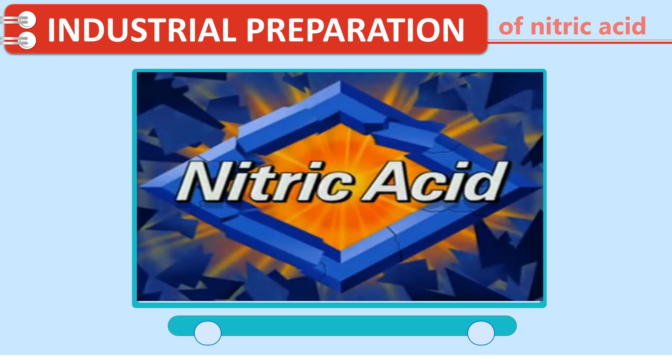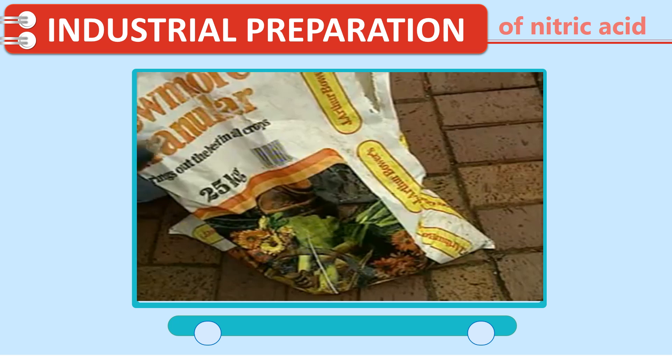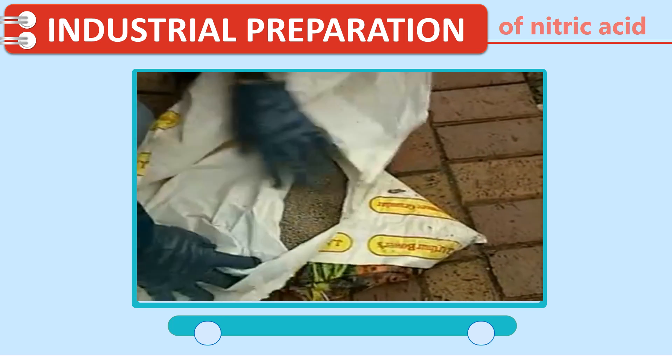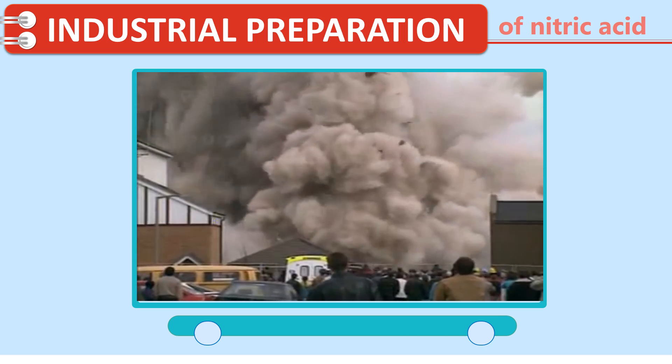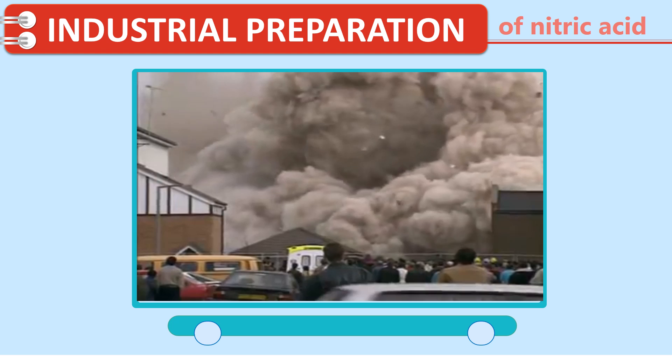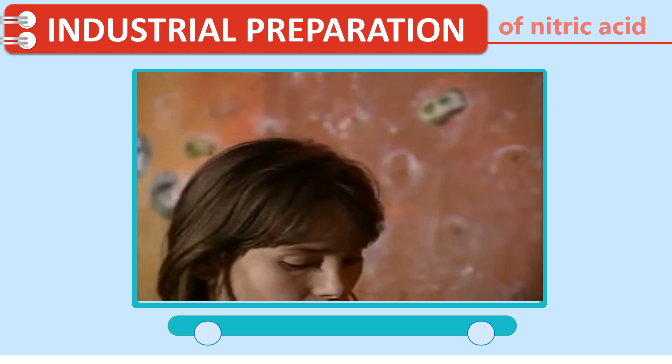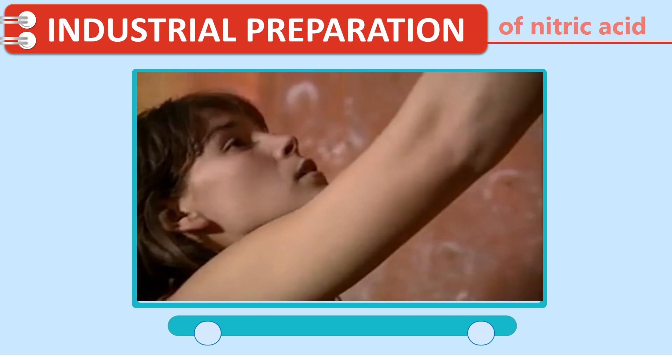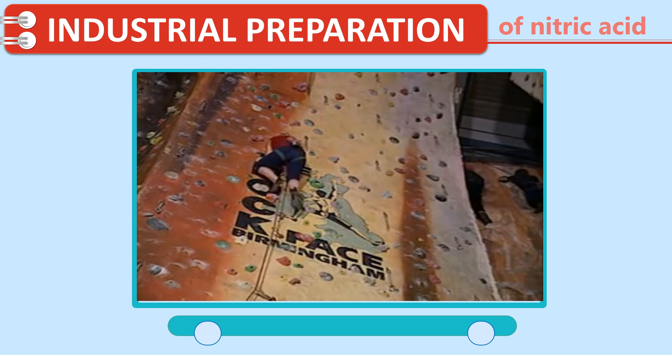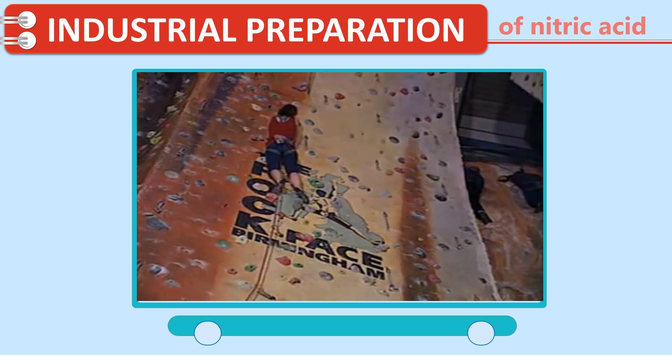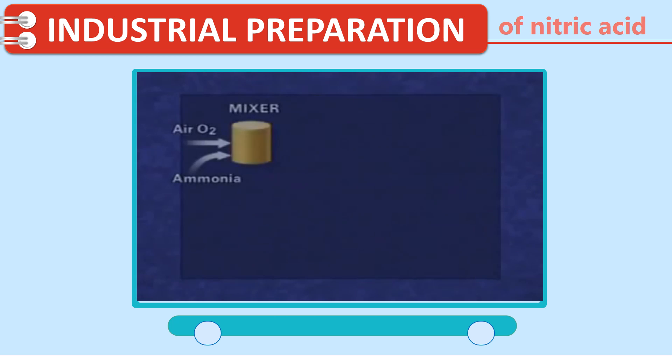About 60 million tonnes of nitric acid are made each year worldwide. Most is used to produce ammonium nitrate fertilizer. Ammonium nitrate is also used in explosives. Nitric acid is used in the making of nylon and for polymers that are used in sports clothing and swimwear.